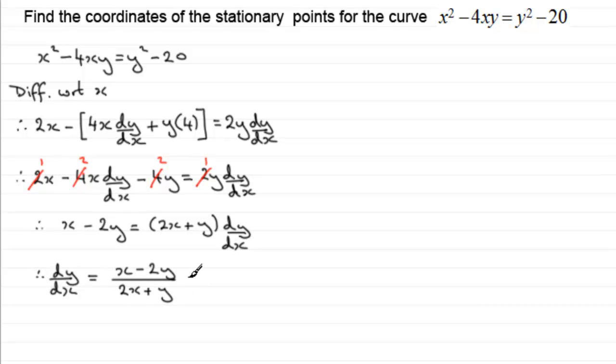So rearranging this for dy by dx gives me that dy by dx equals x minus 2y, all divided by 2x plus y. Now I know that at stationary points dy by dx should equal 0. So let's just put here at stationary points dy by dx equals 0.